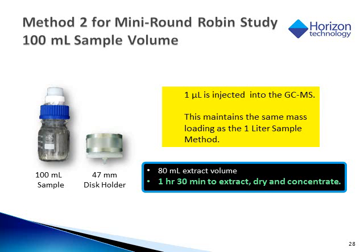In addition to method one, a second method was performed in parallel. A 100-milliliter sample was extracted with the 47-millimeter disc using a standard disc holder. To keep mass loading on the GC equivalent to the 1-liter sample, the injection mode on the GC was splitless. The benefit of lower sample volumes was a smaller extraction volume of 80 milliliters of solvent, and the processing time to extract, dry, and concentrate was 1.5 hours.